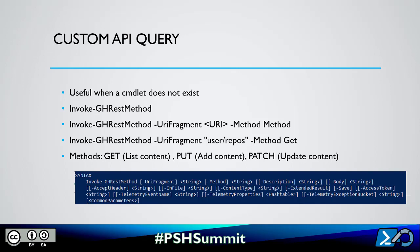There are different methods: GET to list content, PUT to add content, PATCH to update content. This is where the GitHub reference API is useful, because you add the link of the resource you want to manage.